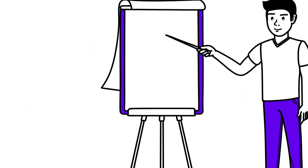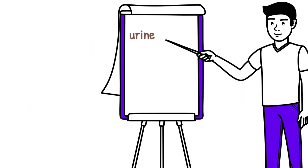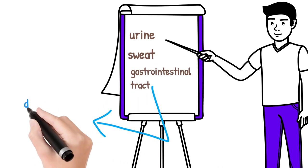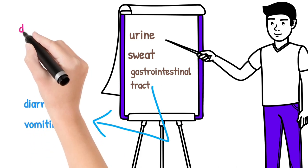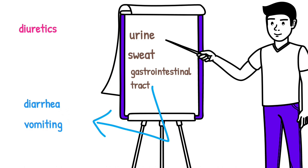The pathophysiology of hypokalemia can be due to a variety of factors that alter the balance of potassium in the body, including increased loss of potassium through the urine, sweat, or gastrointestinal tract. This can occur as a result of several conditions such as chronic diarrhea, vomiting, or the use of certain medications like diuretics that promote the excretion of potassium from the body.